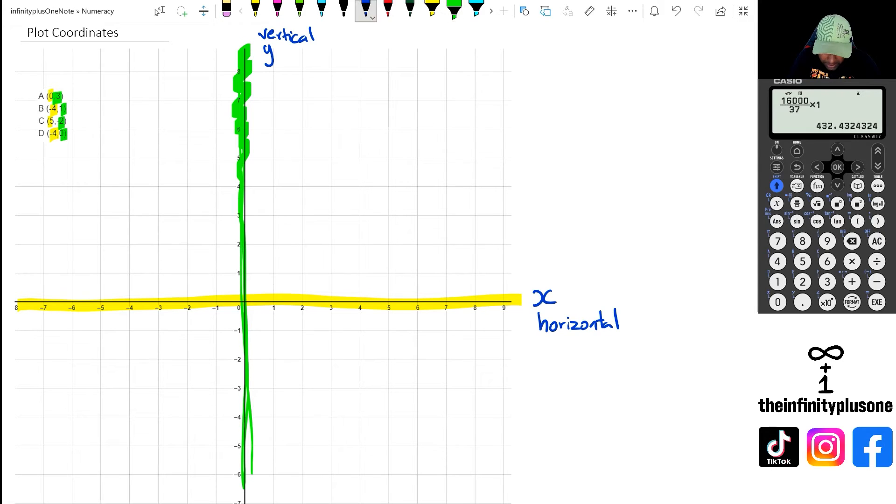So if we look at point A, I'm just going to write it bigger here. Point A is 0, 3. So that means we're going to go along the x-axis, which is at 0, and then on the y-axis we're going to go to 3. So this point right here is going to be A.